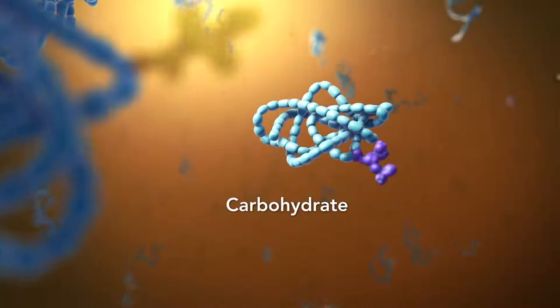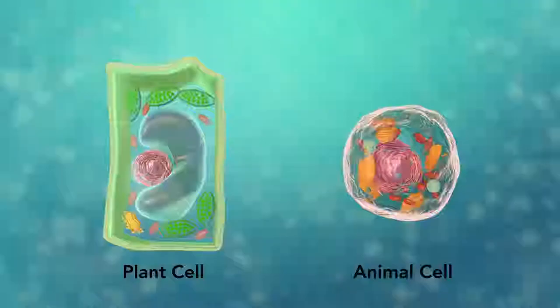Vacuoles are sac-like structures that store different materials. Here, in this plant cell, the central vacuole stores water.